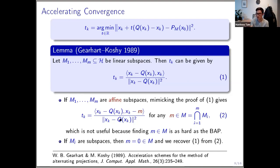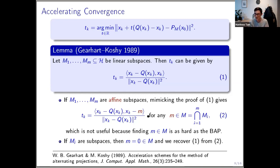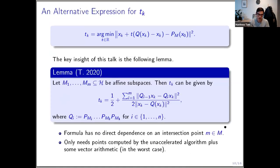That is generally not desirable because it means to use this formula we would have to know an intersection point — not necessarily the solution but an intersection point — which means solving another problem first. Additionally, in the linear subspace case formula one is recovered from formula two by taking m equal to zero, since the zero vector is always feasible. For the affine case we don't have this, and that's essentially why the translation argument breaks down.